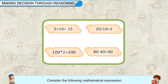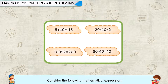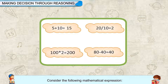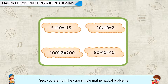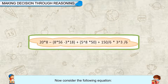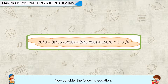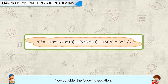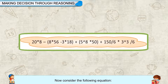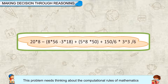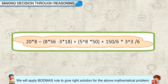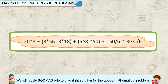Consider the following mathematical expressions: 5 + 10 = 15, 20 ÷ 10 = 2, 100 × 2 = 200, 80 − 40 = 40. These are simple mathematical problems solvable with little effort. Now consider: 20 × 8 − 8 × 56 − 3 × 18 + 5^8 × 50 + 150 ÷ 6 × 3^3 ÷ 6. This problem needs thinking about computational rules of mathematics — breaking it into smaller parts and combining the results. We will apply BODMAS rules to find the right solution.